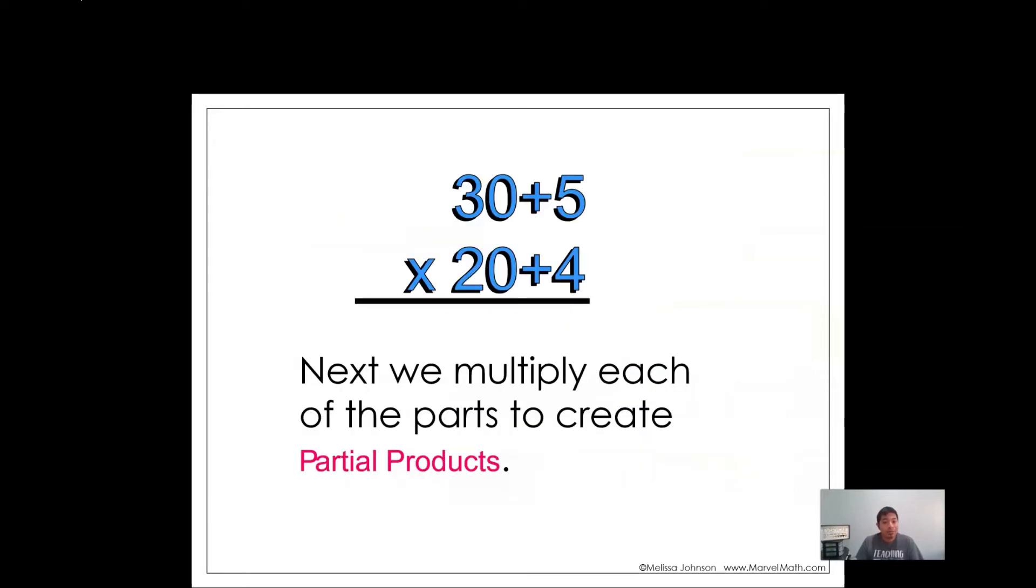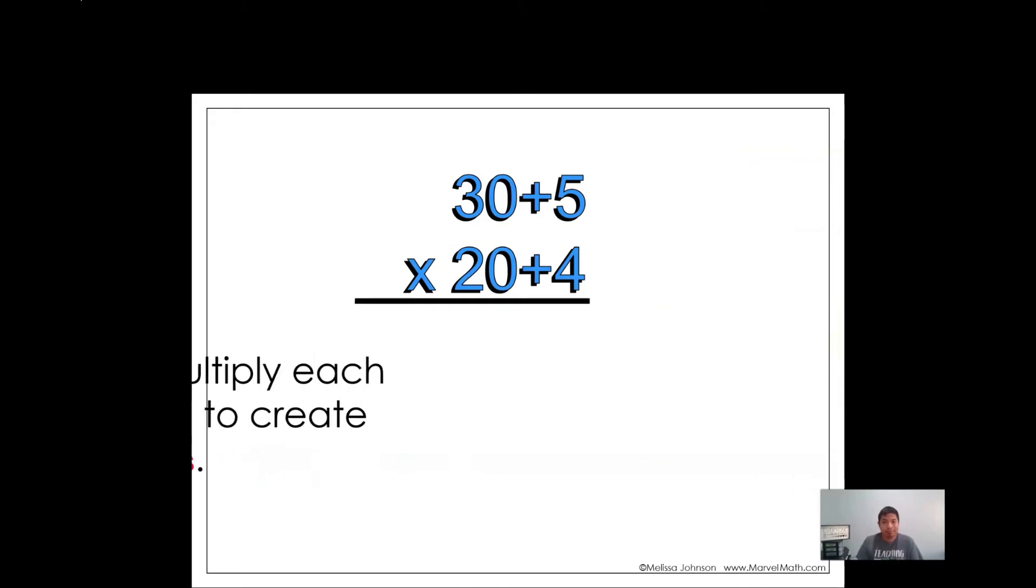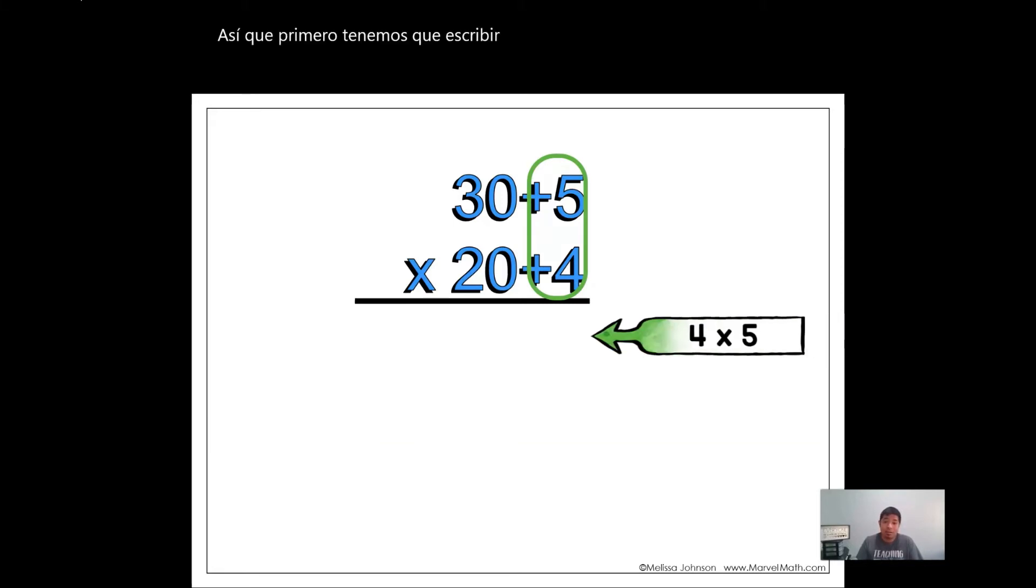Next we multiply each of the parts to create partial products. So 4 times 5, which is the values, they're already in its values. 4 times 5 equals 20. Then we multiply the value of 4 times 30. 4 times 30, power of 10, which equals 120.